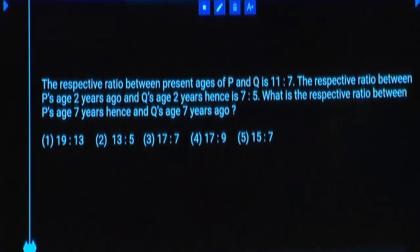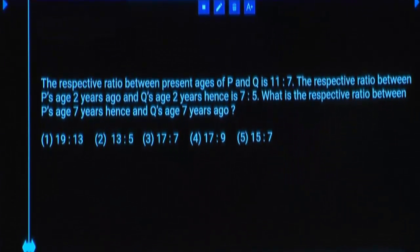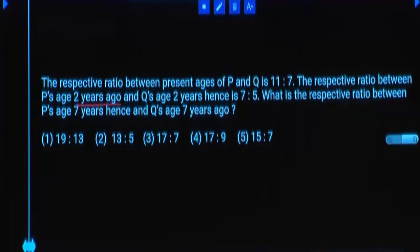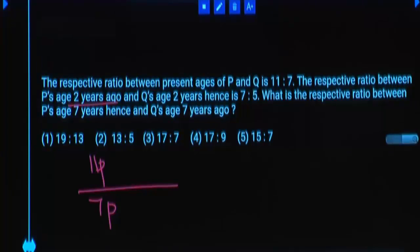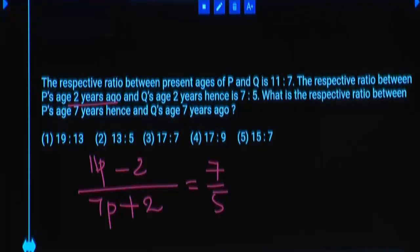The respective ratio between present age of P and Q is 11 is to 7. The respective ratio between P's age 2 years ago and Q's age 2 years hence is 7 is to 5. Note: 2 years ago and 2 years hence are different. P's present age is 11 parts and Q's present age is 7 parts. Take P's age minus 2 and Q's age plus 2, with ratio 7 is to 5.